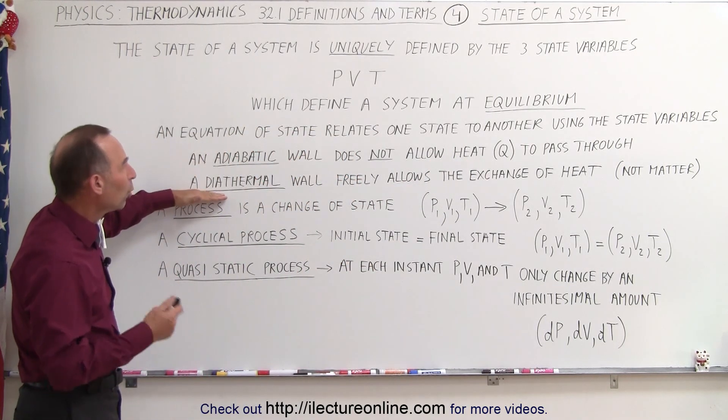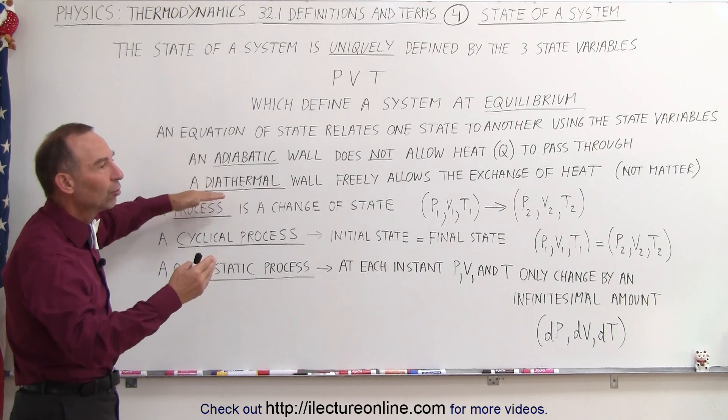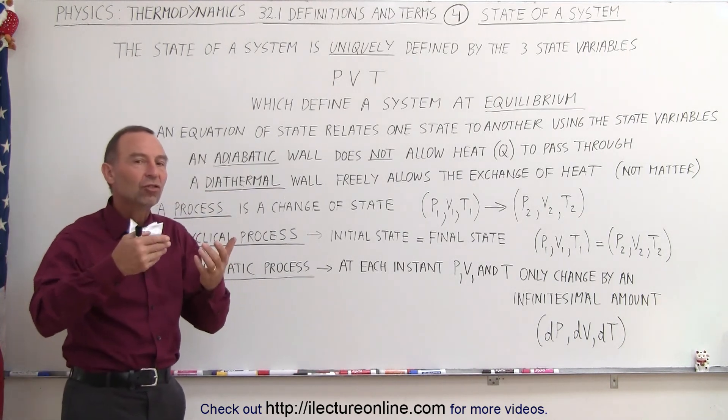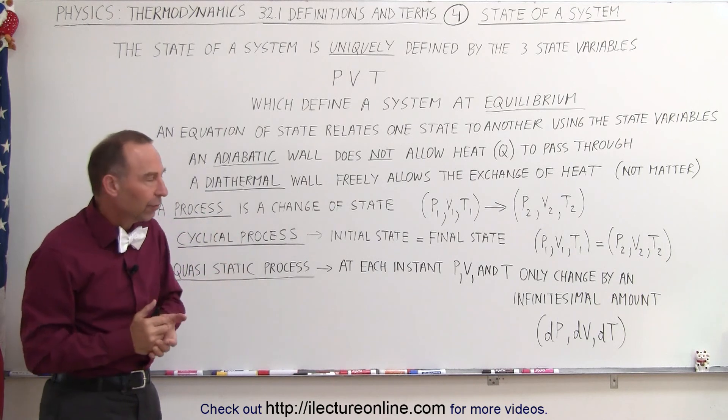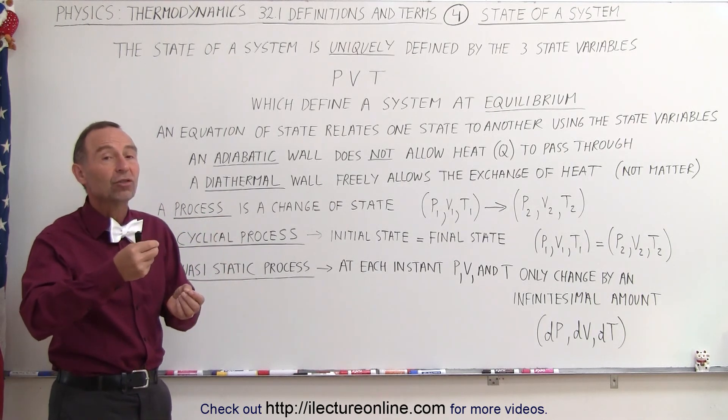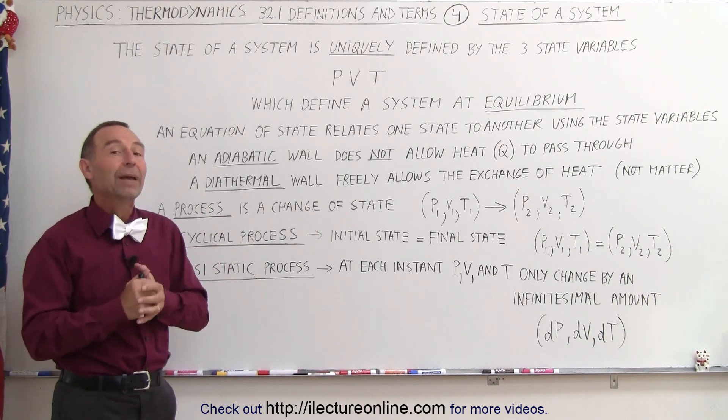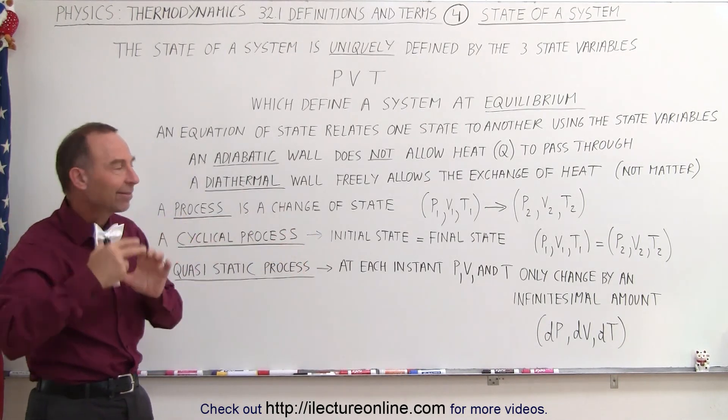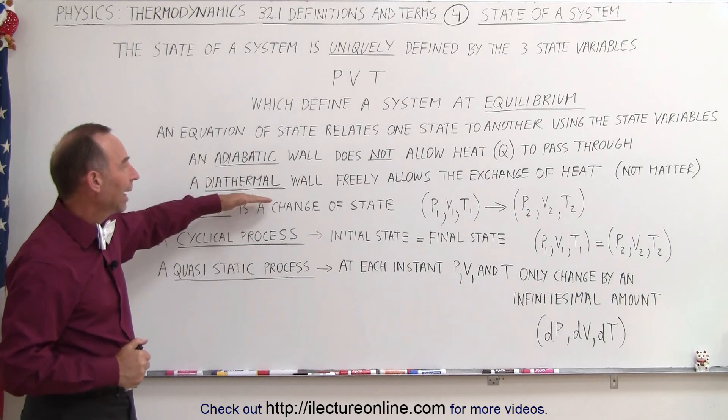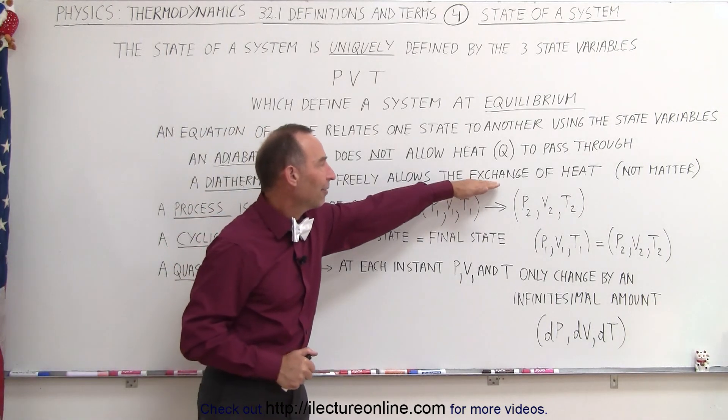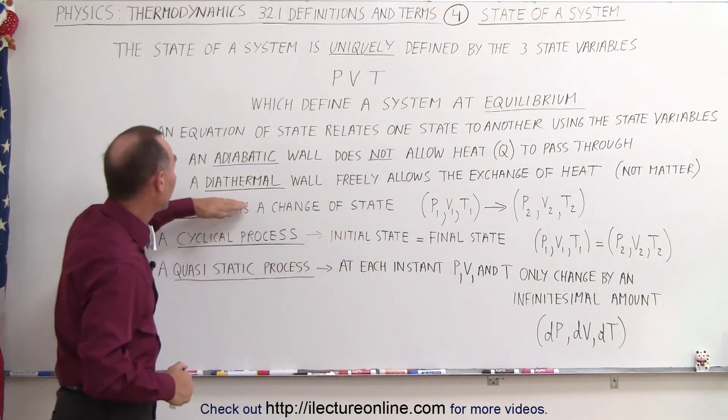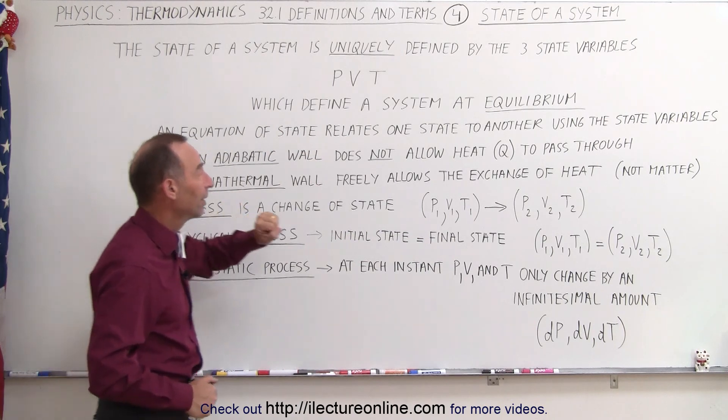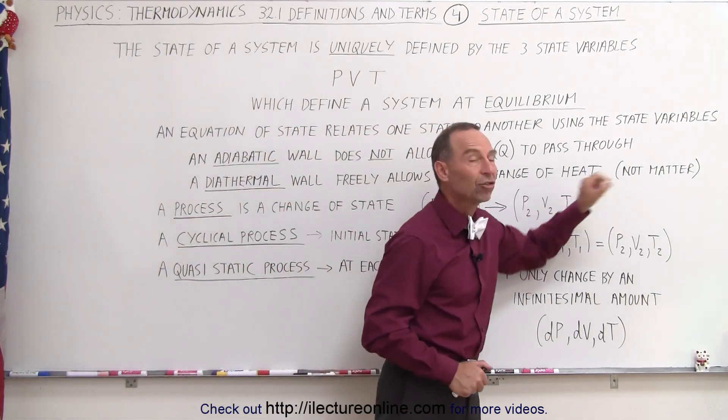A diathermal wall freely allows the exchange of heat. When a state changes and the temperature changes, one of the reasons why it may have changed is because heat may have either entered or left that sample of gas. Therefore, we will have had an exchange of heat. That means we had a diathermal wall, but it does not allow the exchange of matter.